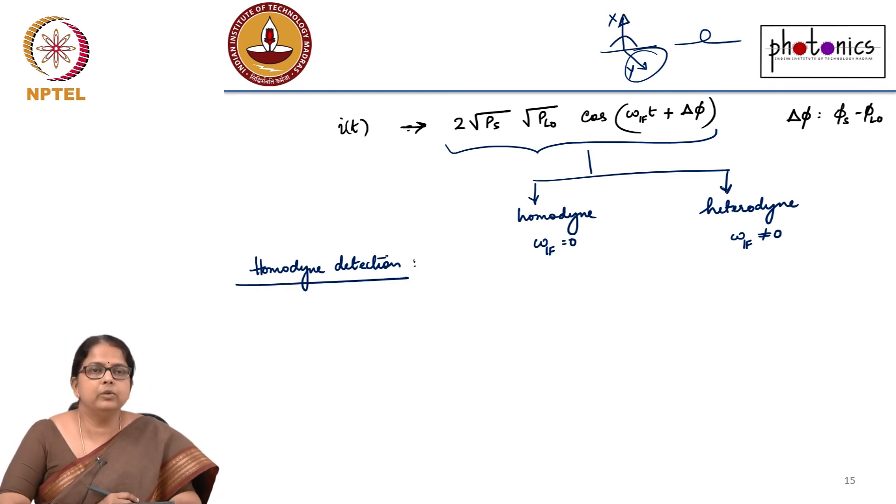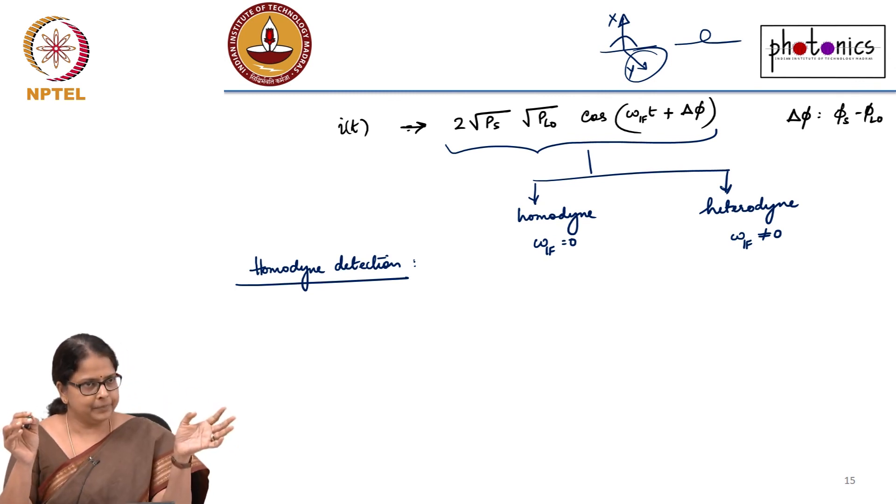Question is why cannot we use an amplifier at a receiver to do what? If I use an electrical amplifier at the receiver, can I increase the power and thereby increase the signal to noise ratio? Noise will also increase. Whenever I use an amplifier, my signal power will increase, but my SNR will always degrade.